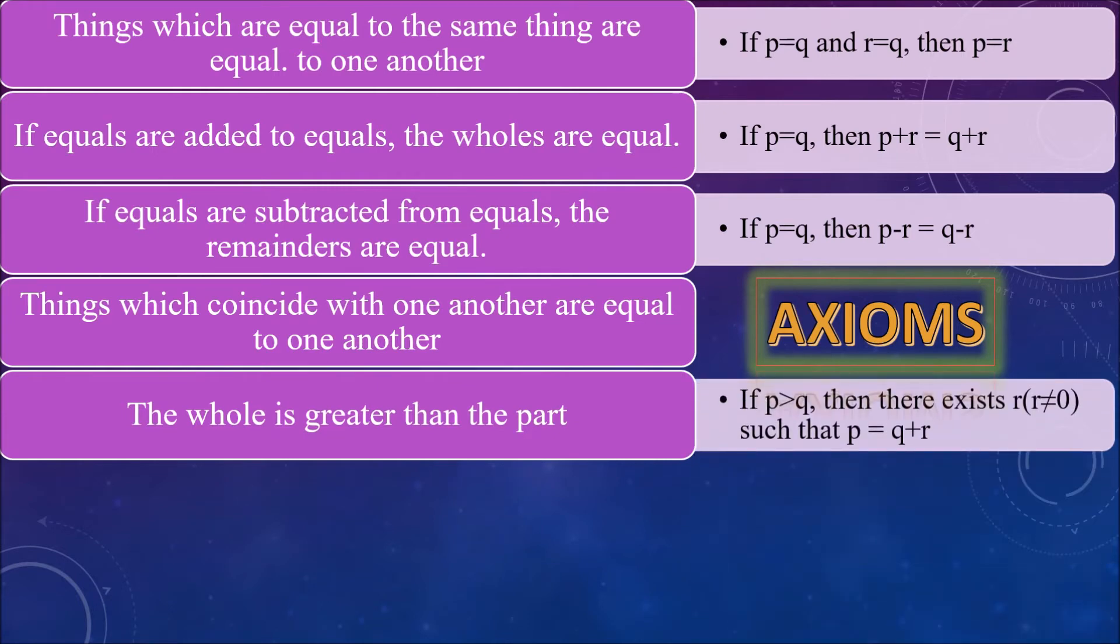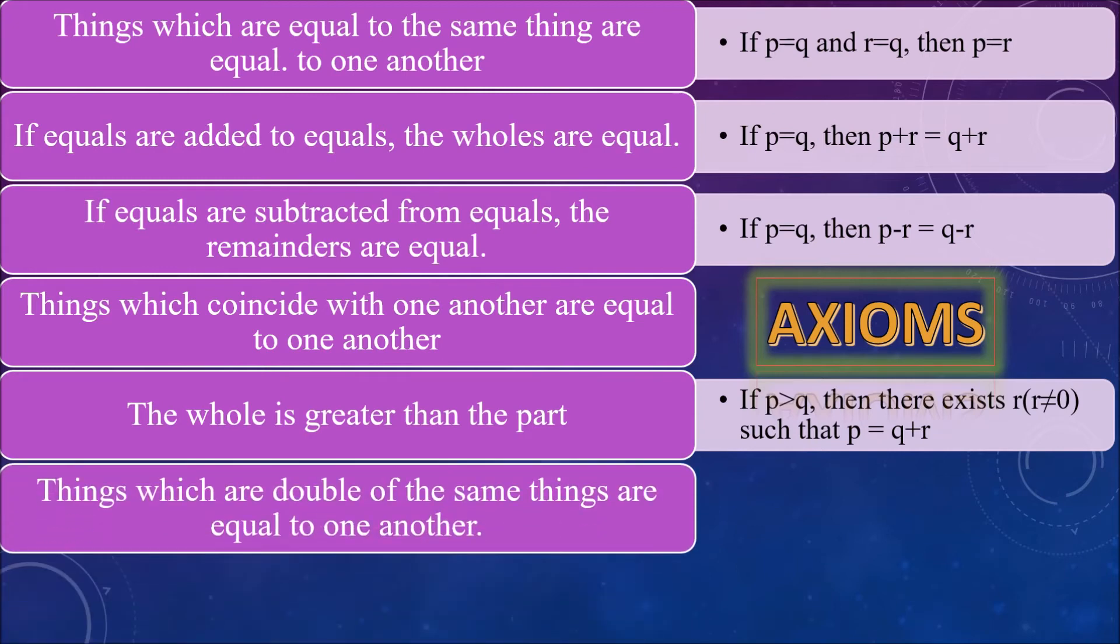Fifth axiom is: the whole is greater than the part. That is, if p is greater than q, then there exists r such that p is equal to q plus r. Sixth axiom is: things which are double of the same things are equal to one another.